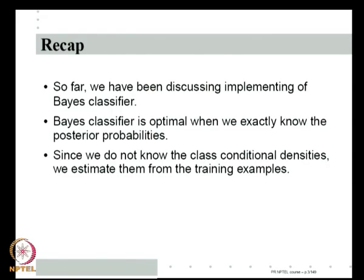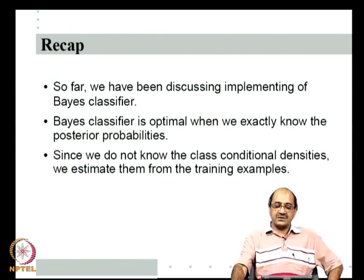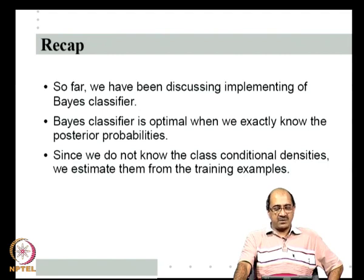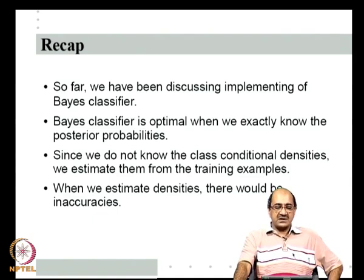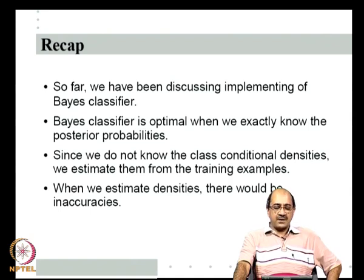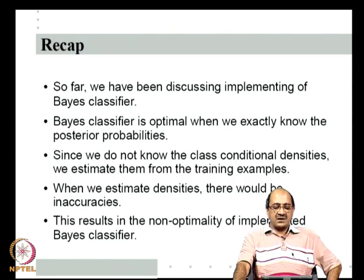Essentially, the Bayes classifier is optimal when we exactly know the posterior probabilities. Since we do not know the posterior probabilities, we use the training set of examples to estimate the class conditional densities and hence the posterior probabilities. This means when we estimate densities there will be inaccuracies, and the Bayes classifier is optimal only when we exactly know the posterior probabilities. When we use estimated densities, those inaccuracies will translate into non-optimality of the implemented Bayes classifier.